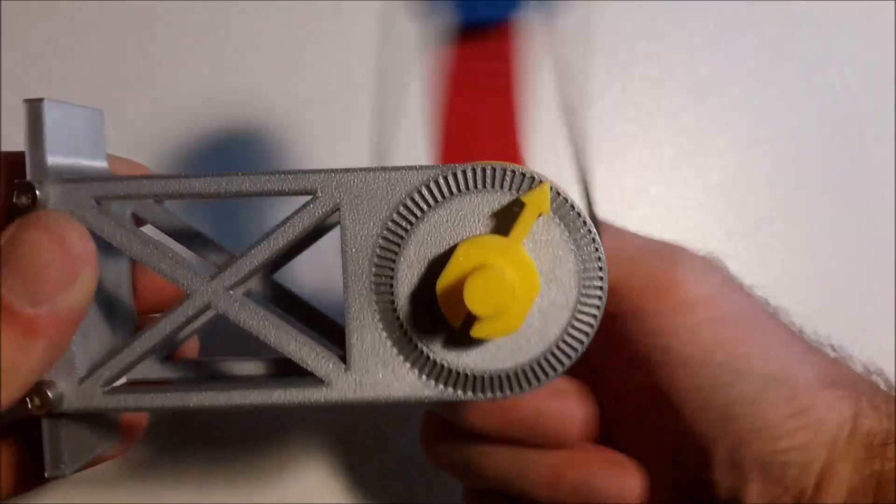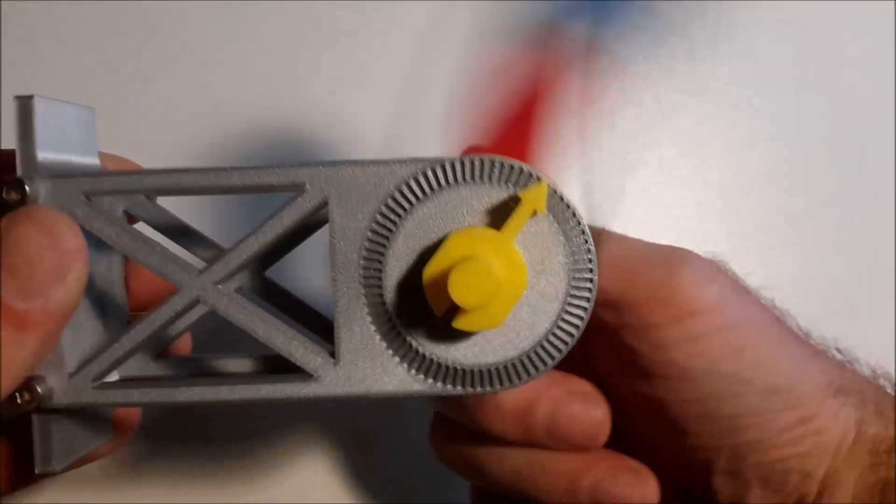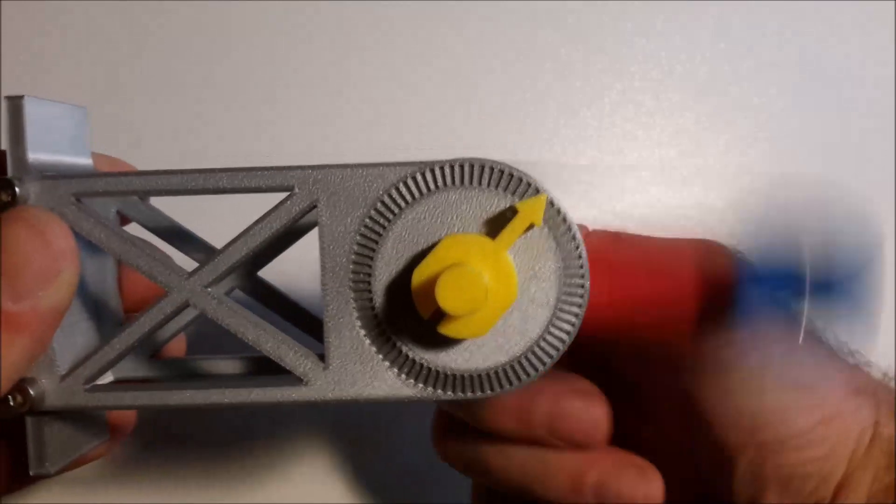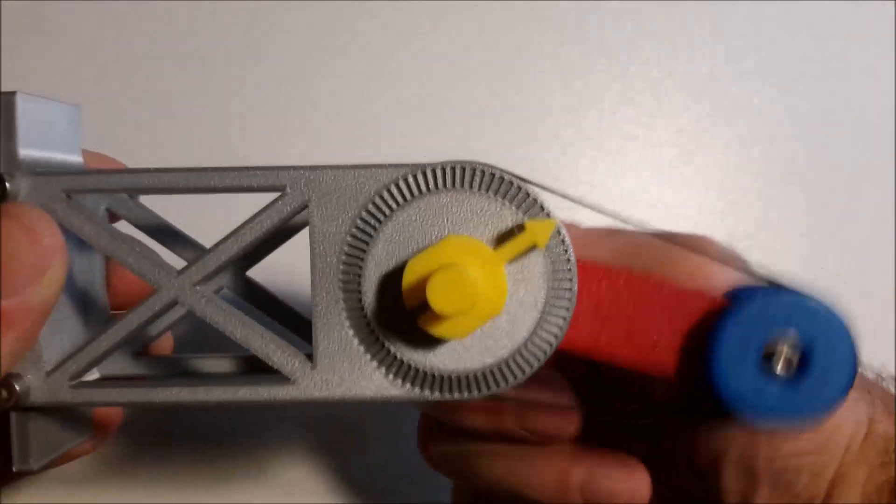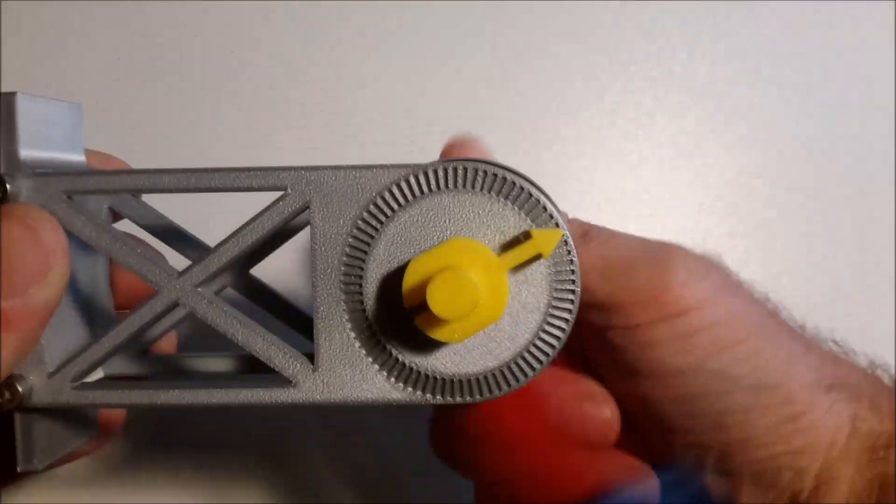As you can see here with this 49mm pulley, the arrow is moving clockwise, while I am moving the input anticlockwise.